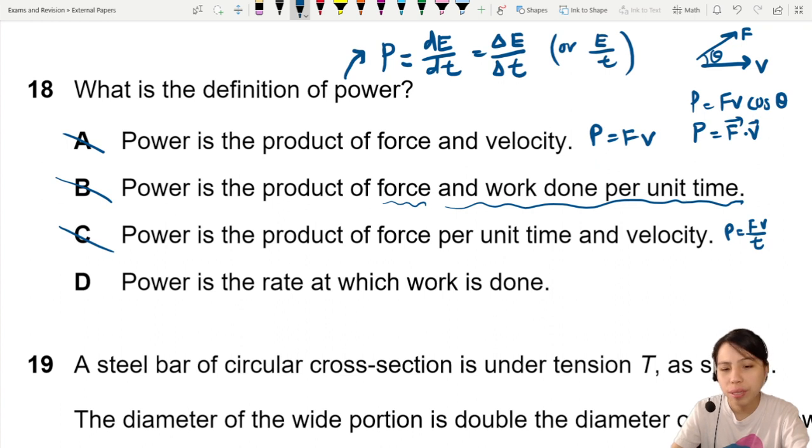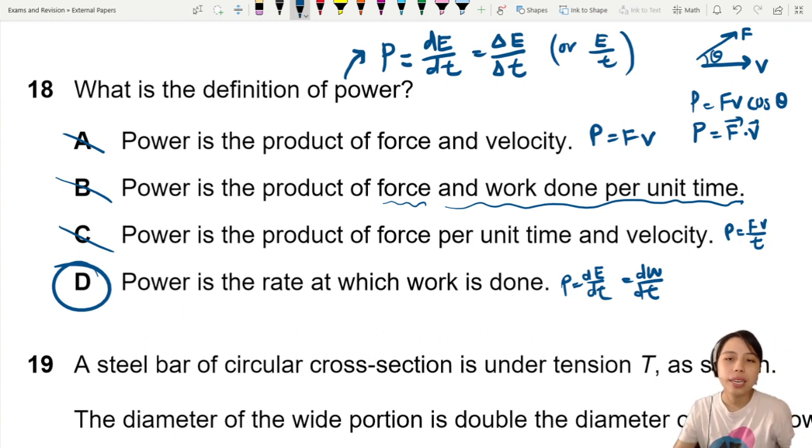D says power is the rate at which work is done. Okay, this one is correct. This one can accept. Rate of energy, or in other words, rate of work done. This one can accept.